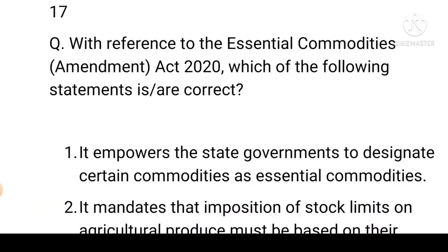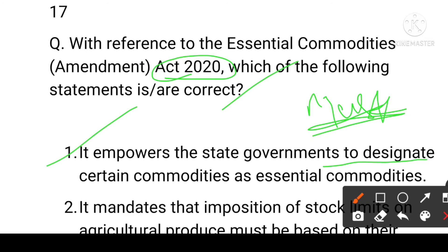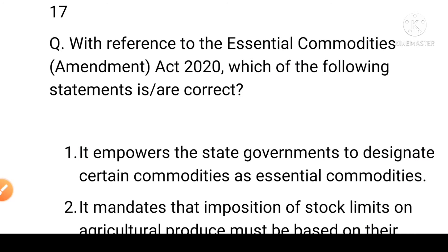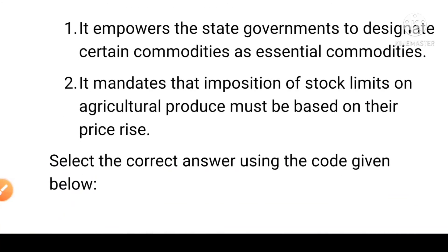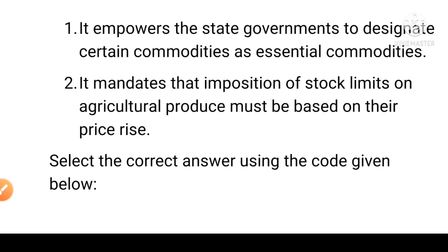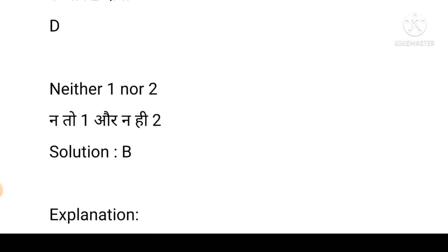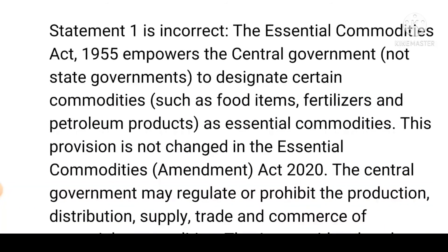Next question: with reference to the Essential Commodities Amendment Act 2020, which statements are correct? First: it imposes on the state government to designate certain commodities as essential commodities. Second: it mandates that imposition of stock limits on agricultural produce must be based on price rise. Options: A is first only, B is second only, C is both correct, D is both incorrect. The answer is B. Statement one is incorrect: the Essential Commodities Act 1955 empowers the central government, not the state government, to designate certain commodities such as food items, fertilizers, and petroleum products as essential commodities.